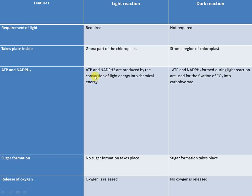ATP and NADPH2 are produced by the conversion of light energy into chemical energy. These ATP and NADPH molecules are used in dark reaction for the fixation of CO2 into carbohydrates. Fourth, in light reaction no sugar is formed, but in dark reaction sugar is formed in the form of glucose. Fifth, in light reaction oxygen is released as the product, but in dark reaction no oxygen is released.